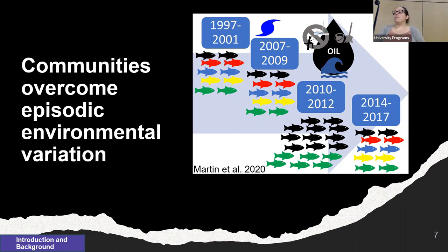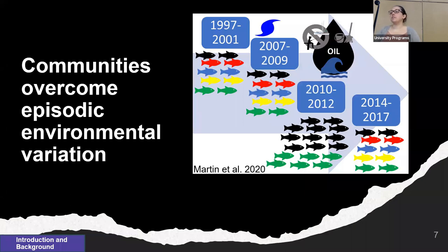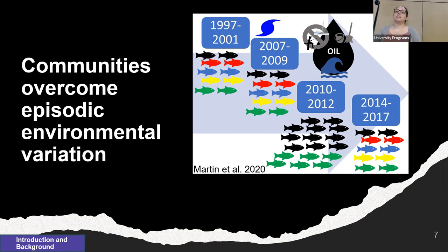One example is a paper by Charlie Martin et al. 2020, which examines changes in necton communities before and after the 2010 Deepwater Horizon oil spill. Necton refers to mobile organisms living in the water column. This paper found that the necton community changed after the oil spill between 2010 and 2012 and recovered in later years. Importantly, immediately after the oil spill all commercial fisheries were shut down, which likely aided in the quick recovery of the necton community.